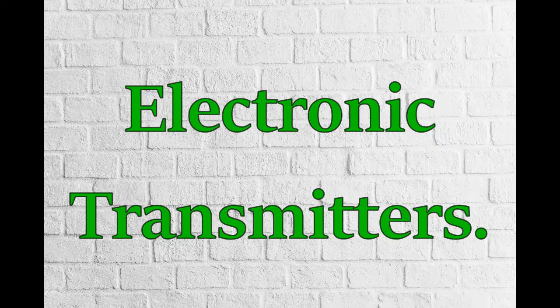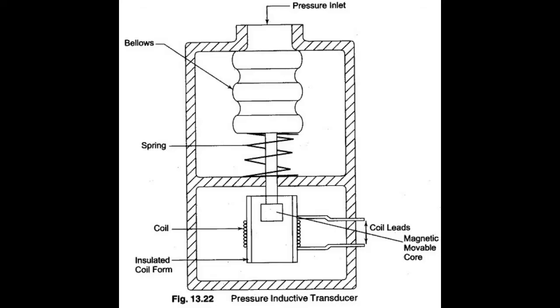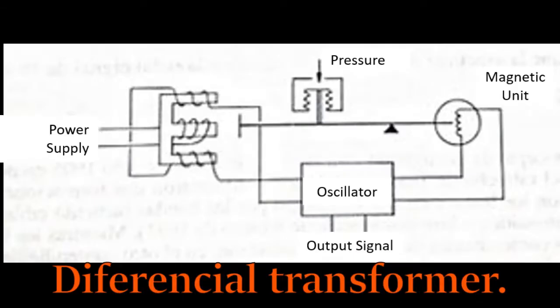Electronic transmitters can base their operation on inductance detectors, differential transformers, Wheatstone bridges, or a force-balance beam, which convert the variable signal into a 4 to 20 mA direct current electronic signal. The problem is that these types of transmitters are sensitive to vibrations and cannot store plant signals.